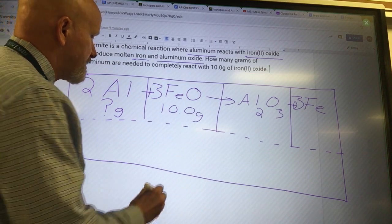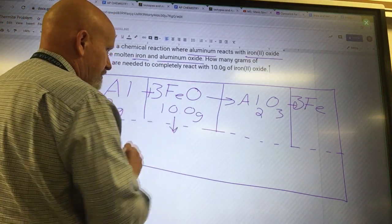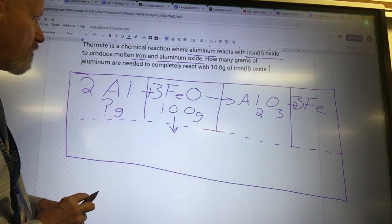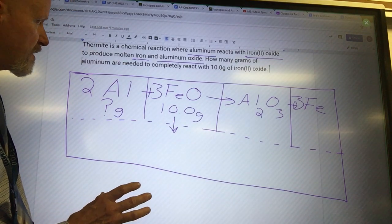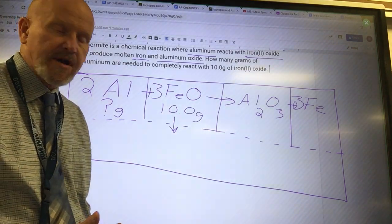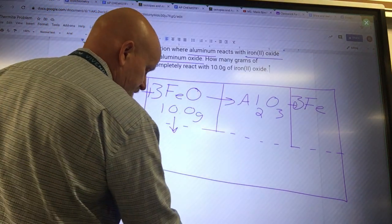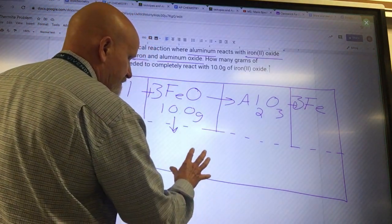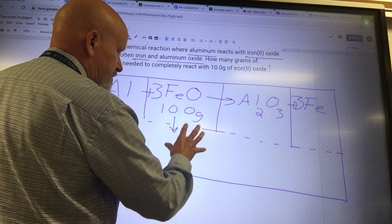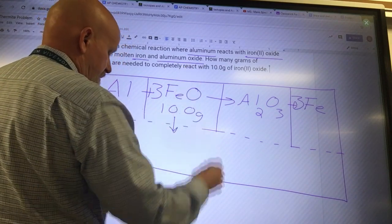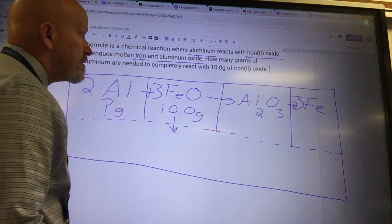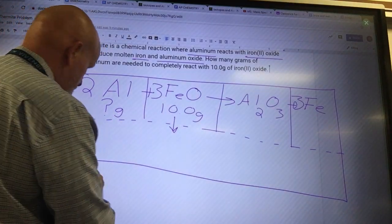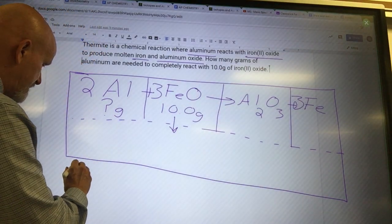So the first thing that I need to do is I'm going to take this 10 grams and I'm going to have to convert that over into how many moles of iron oxide I actually have. Let me see if I can move this thing up. I don't know if I can. It's not going to let me do that. So let's just go ahead and maybe we can do it down here.